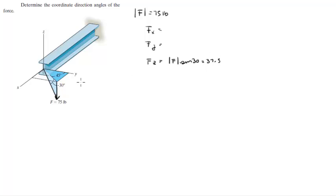Now we're going to find this vector right here, which is the projection of F along the X and Y plane, and it's easily given by F cosine of 30, and this comes out to be 64.95.